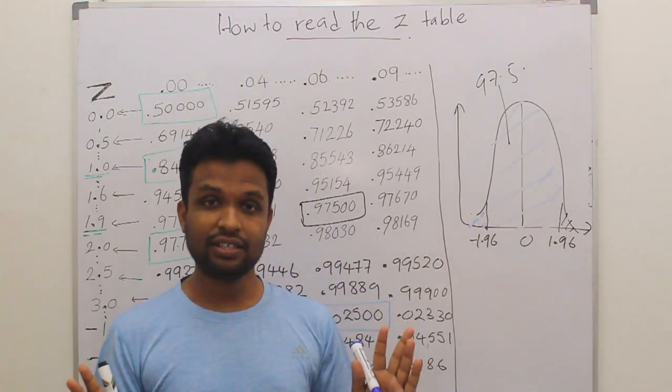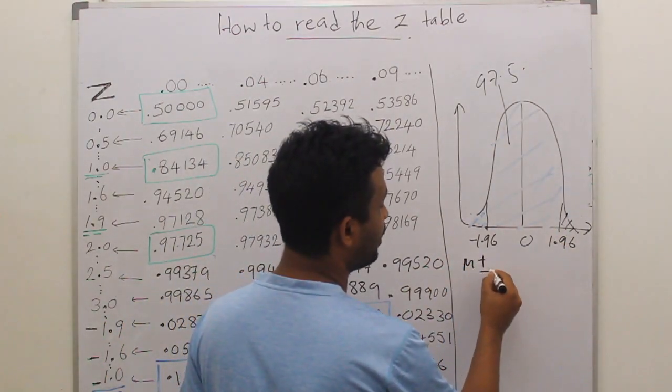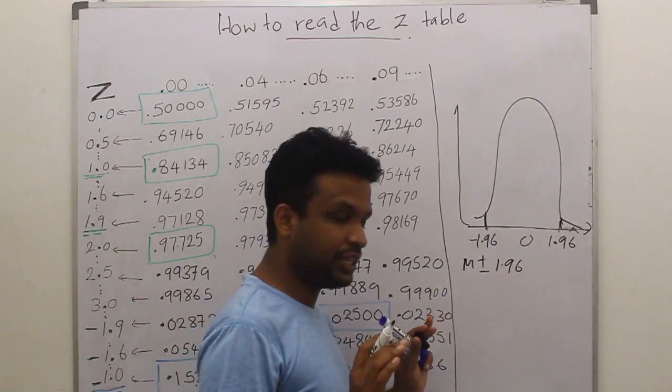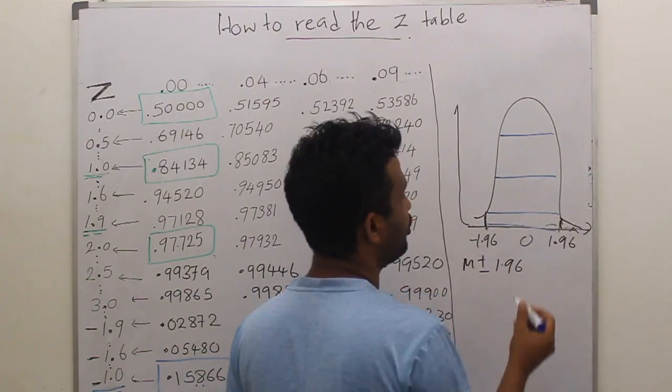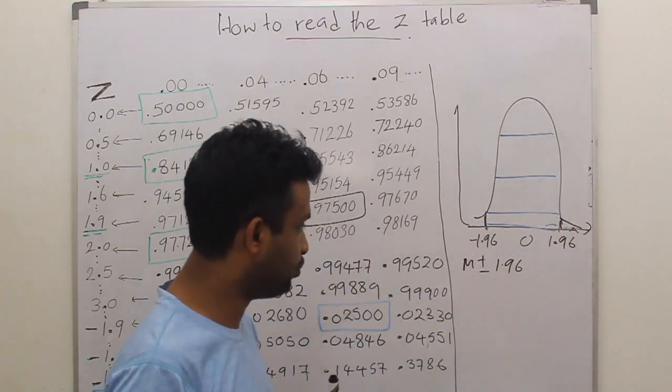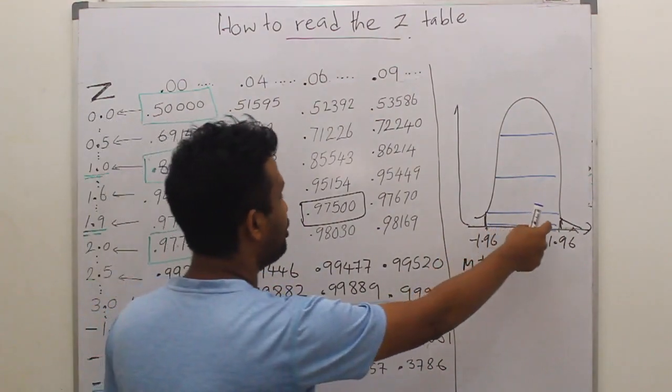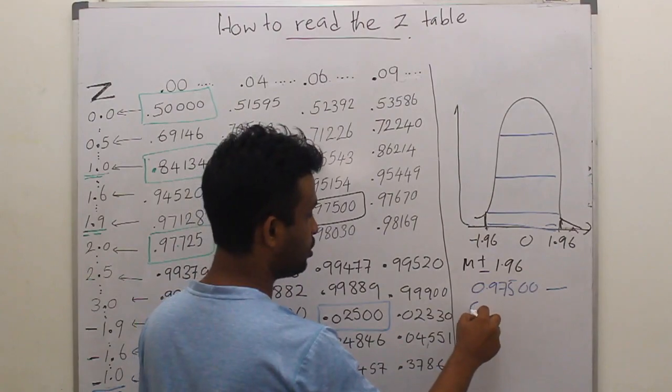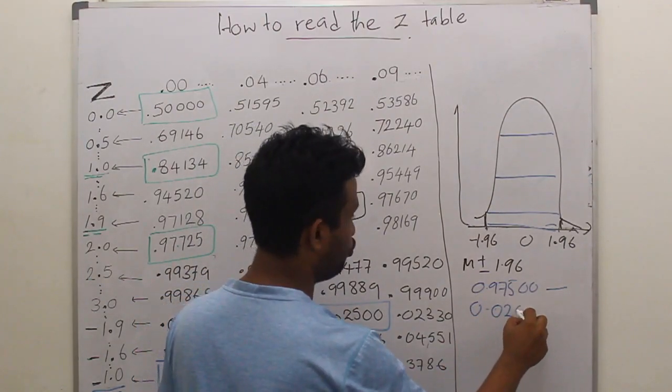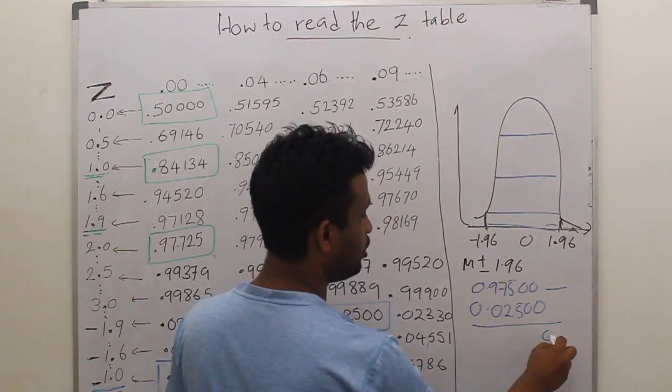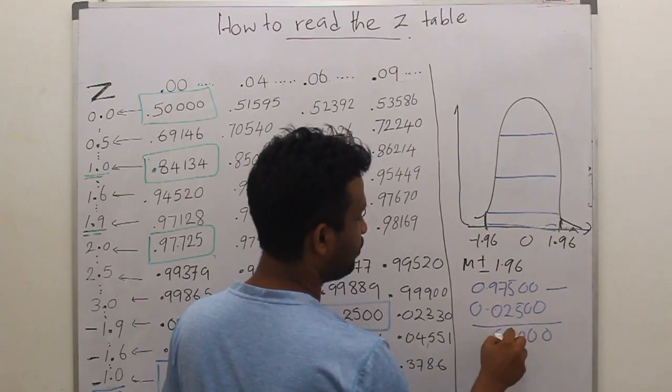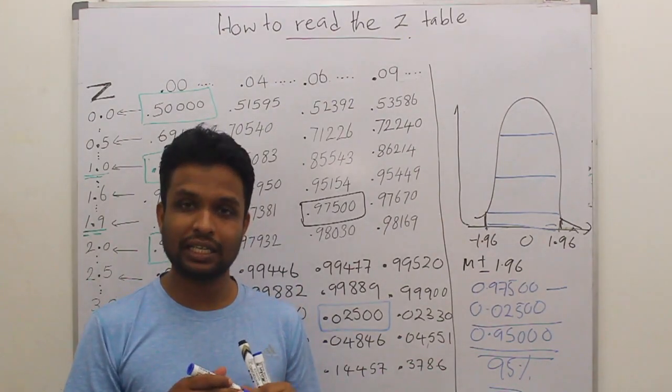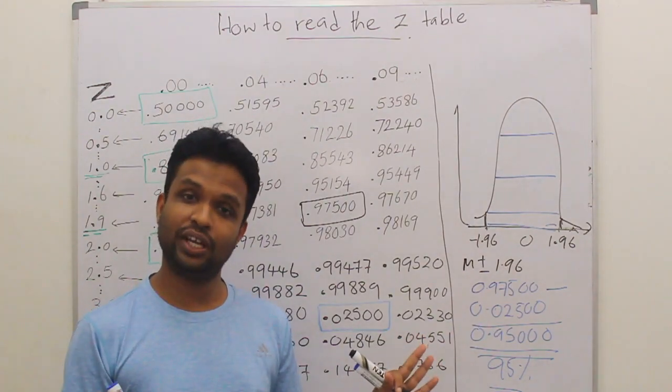So we know that. We are interested in mean plus or minus 1.96, which is this total area. We know it's approximately 95%. How do you get this point? Now, we understood that the upper point probability is 0.9750 and you have to subtract the lower limit value which is 0.02500, which equals 0.95000. That is exactly 95%. I hope you are clear at that point. That is how you read the Z table.